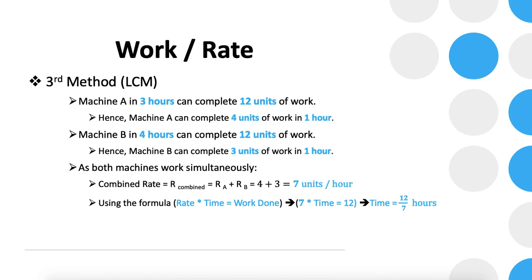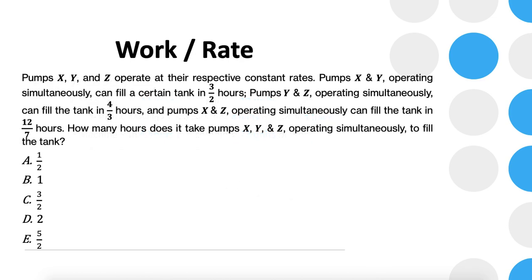Now let's jump to the question. We have three pumps X, Y, and Z operating at their respective constant rates. Pump X and Y operating simultaneously can fill a tank in 3/2 hours. Pump Y and Z simultaneously can fill the same tank in 4/3 hours. Pump X and Z simultaneously can fill the same tank in 12/7 hours. How many hours does it take all three pumps working simultaneously to fill the tank?